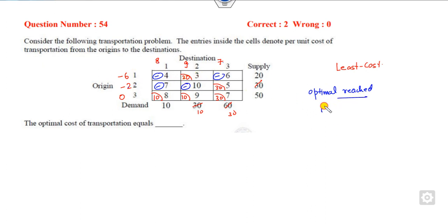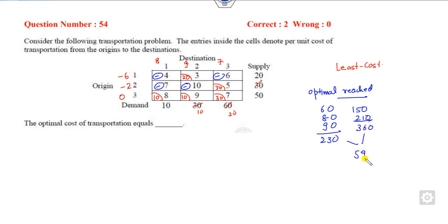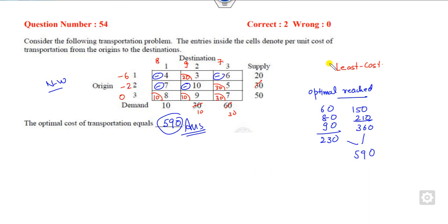So what is the right answer? The cost values are 60, 80, 150, 250 or 210, and 90. Adding them: 230 plus 360 gives 590 as the required optimal answer. Remember: always start with northwest corner first. If you get a positive value in the non-occupied cells, leave it and apply the least cost method. There is no need to apply the Vogel's approximation method.